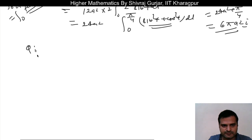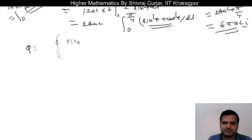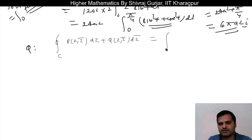The question is: given a simply connected closed curve C, P is a function of z and z-bar and has continuous partial derivatives. D z plus Q is also a function of z and z-bar. We will prove this should be equal to the double integral over the region R.